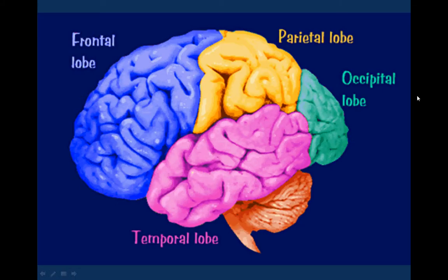The cerebral cortex can be divided into four lobes, and the lobes are named for the skull bones that cover them. There is the occipital lobe, the parietal lobe, the temporal lobe, and the frontal lobe.